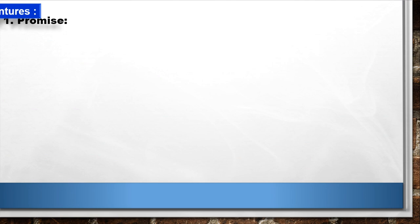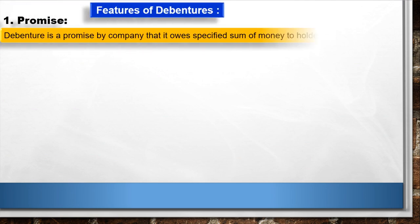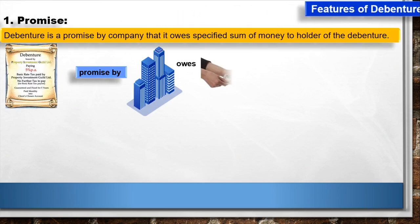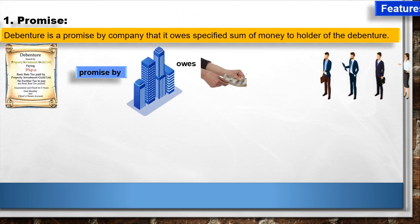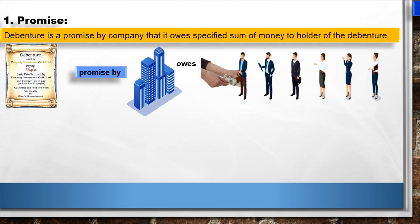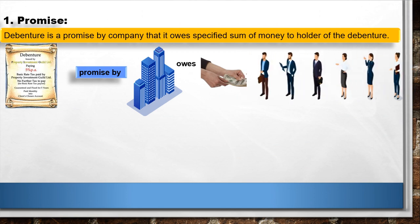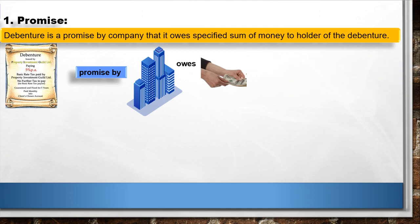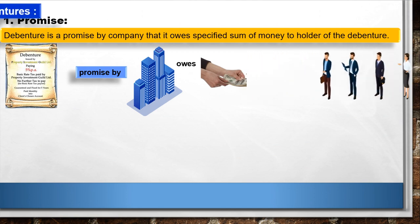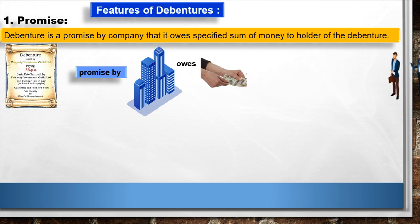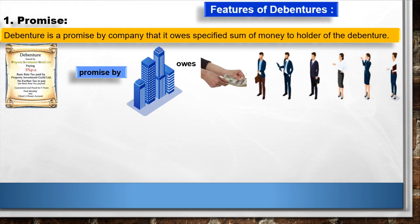Features of Debentures. 1. Promise: Debenture is a promise by the company that it owes a specified sum of money to the holder of the debenture. Debenture company द्वारा एक promise है कि यह debenture holder को specified money का payment करेगी.